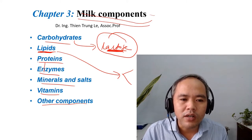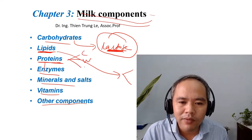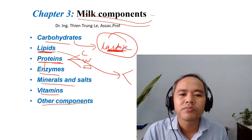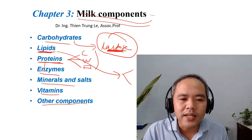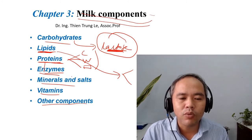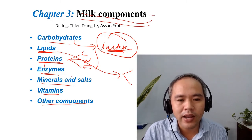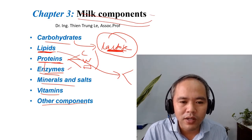About proteins: what are the groups of proteins in milk? We have casein, we have whey protein, and we have a minor group that we should also discuss, along with the main properties of each group. Regarding enzymes — what are the main enzymes occurring in milk? Where do they come from? They may be naturally in milk, or they can come from outside, from bacteria for example. We will look at what the main and important ones are.